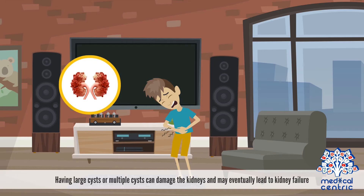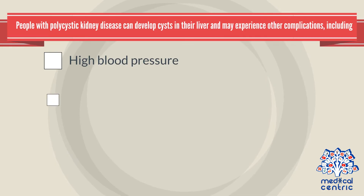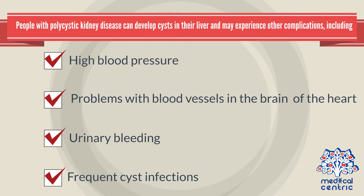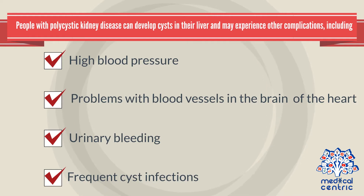Having large cysts or multiple cysts can damage the kidneys and may eventually lead to kidney failure. Polycystic kidney disease is the fourth leading cause of kidney failure. People with polycystic kidney disease can develop cysts in their liver and may experience other complications, including high blood pressure, problems with blood vessels in the brain and the heart, urinary bleeding, and frequent cyst infections.